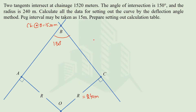We are asked to calculate all the necessary data for setting out the simple circular curve by the deflection angle method. The peg interval should be taken as 15 meters, and we also have to prepare the setting out calculation table.